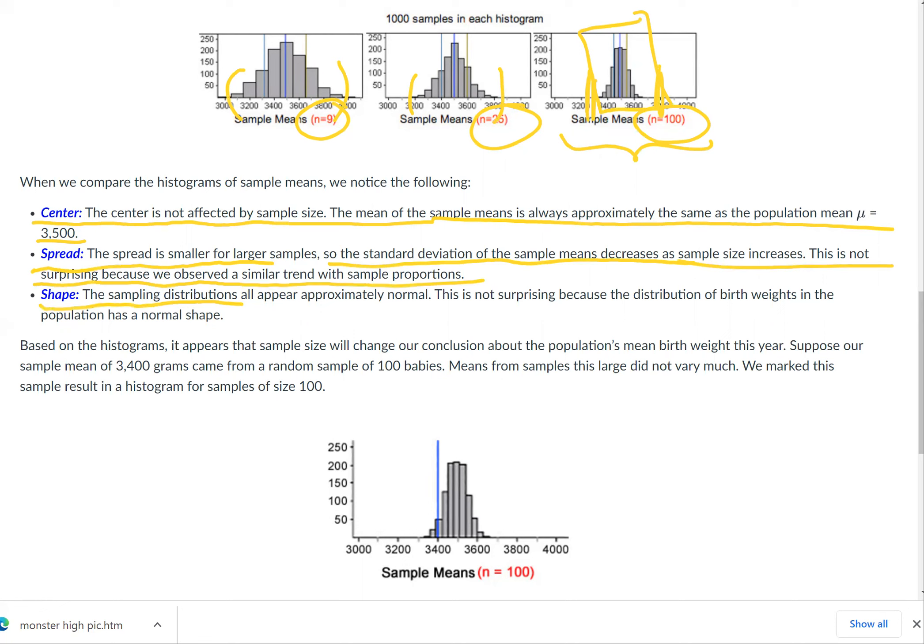Now shape. The sampling distributions all appear approximately normal. This is not surprising because the distribution of birth weights in the population has a normal shape.